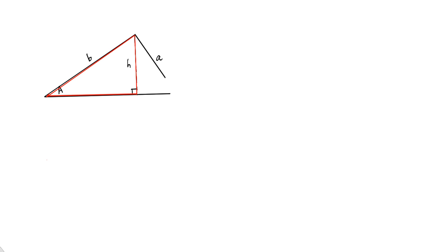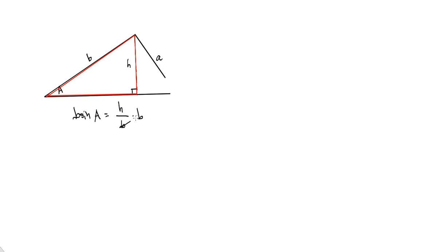I can get an expression for H using A and B. H is the opposite side of angle A, and B is the hypotenuse for that right triangle. So I can say that the sine of angle A equals opposite over hypotenuse. If I multiply both sides by B, I get an expression for the height of my triangle using side B and angle A — that's an angle and its adjacent side. So H equals B times sine of A.